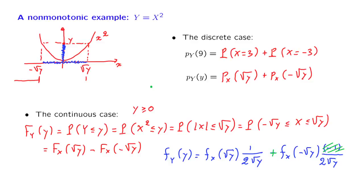The PDF of y evaluated at a particular point — which tells us the probability that the random variable takes values around that point — depends on the probabilities that x takes values around the positive or negative square root of y. There are two contributions because there are two different ways a value of y may occur: either x falling at the positive square root or x falling at the negative square root of y.